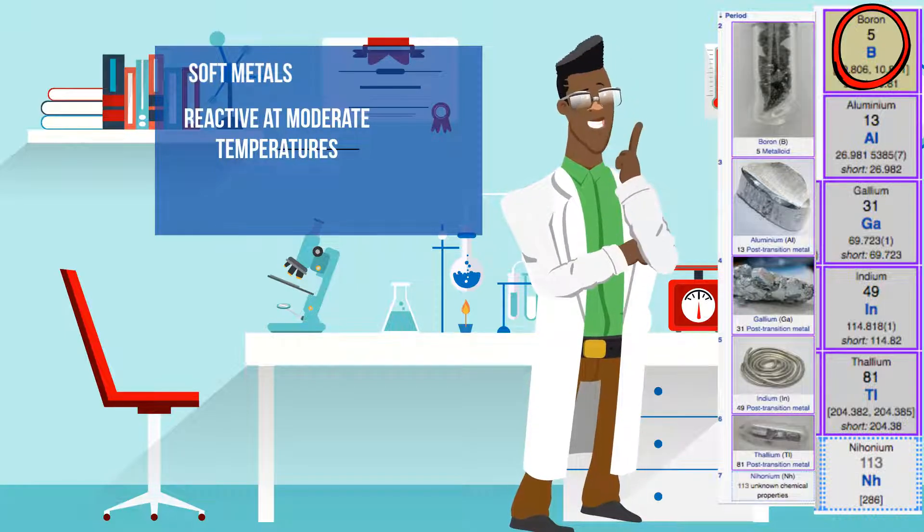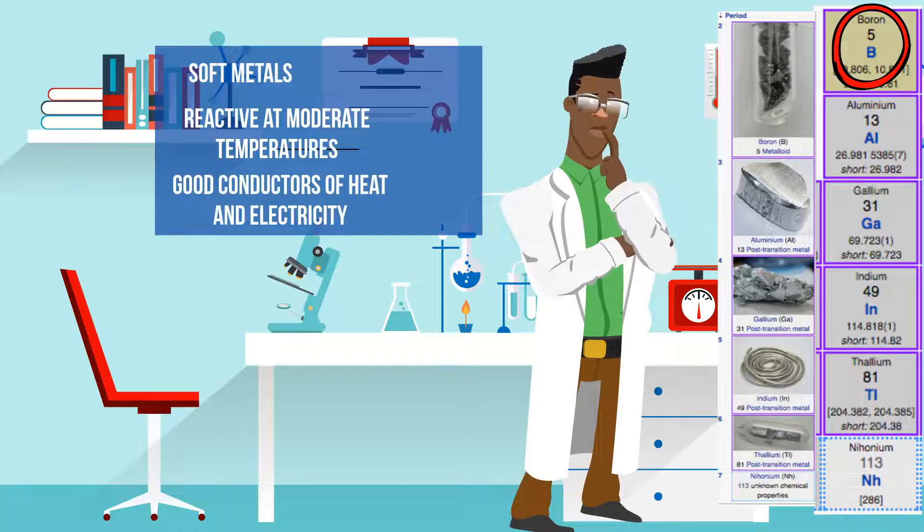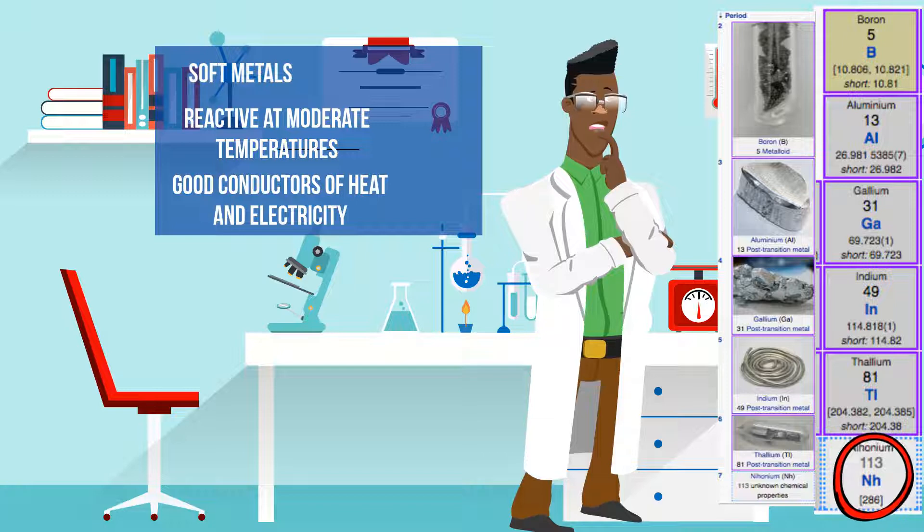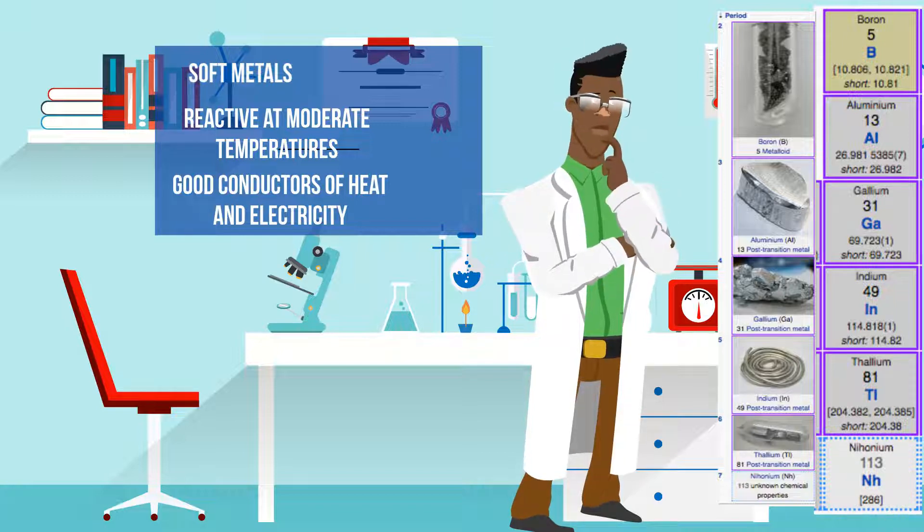The metals in the group are good conductors of heat and electricity, except for Boron. As you move down this group, the boiling points get lower and the density increases.